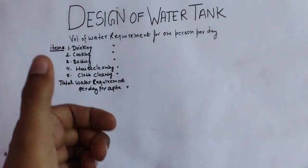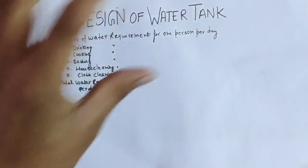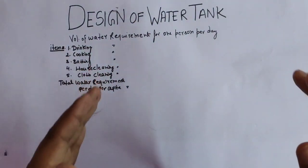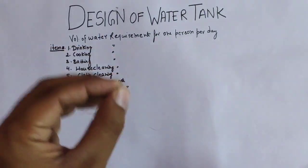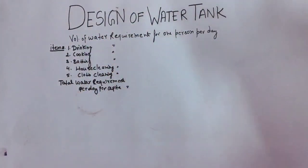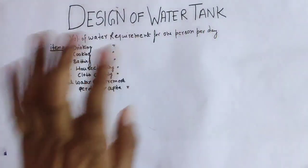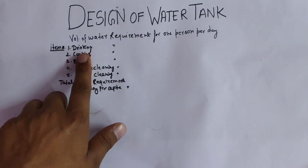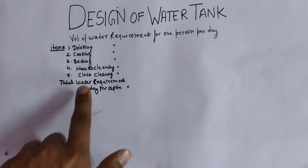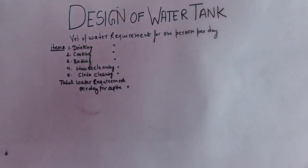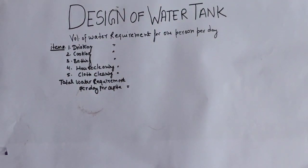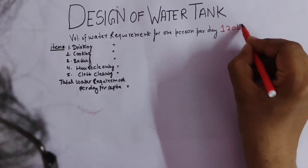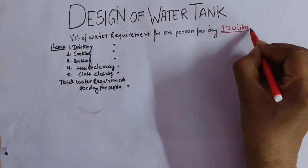If you design the water tank for one person, you can calculate the water tank requirements for any number of people, because the criteria and items are the same for all people in their daily life. Now we are going to focus on calculating water requirement for one person per day, or per capita. The volume of water required for one person per day — I am taking this as 120 liters. This is my assumption.